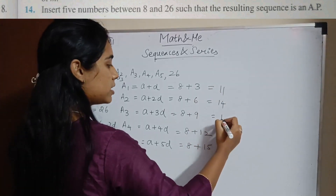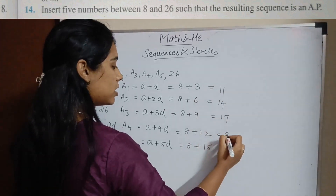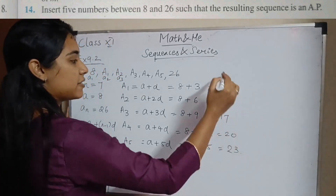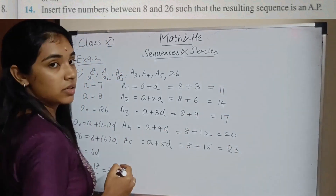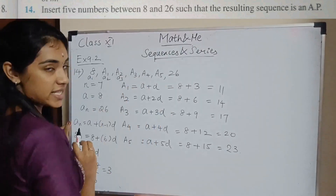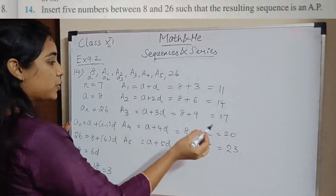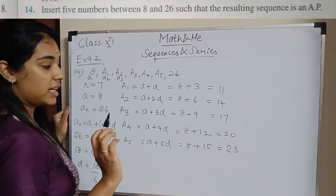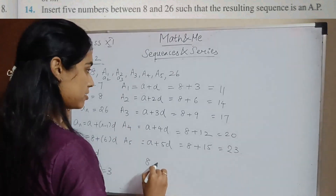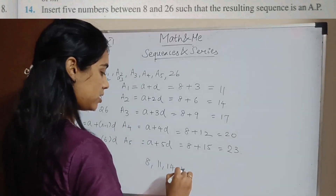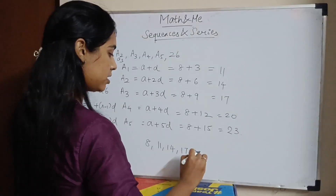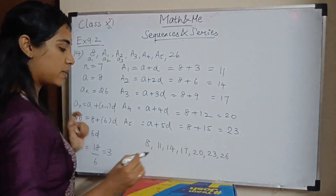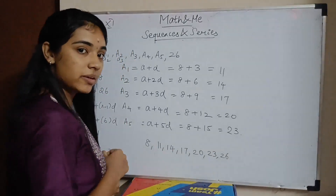So the 5 numbers to insert between 8 and 26 are 11, 14, 17, 20, and 23. When you include all these numbers, the full sequence is 8, 11, 14, 17, 20, 23, 26 — with a common difference of 3, confirming it is an AP.